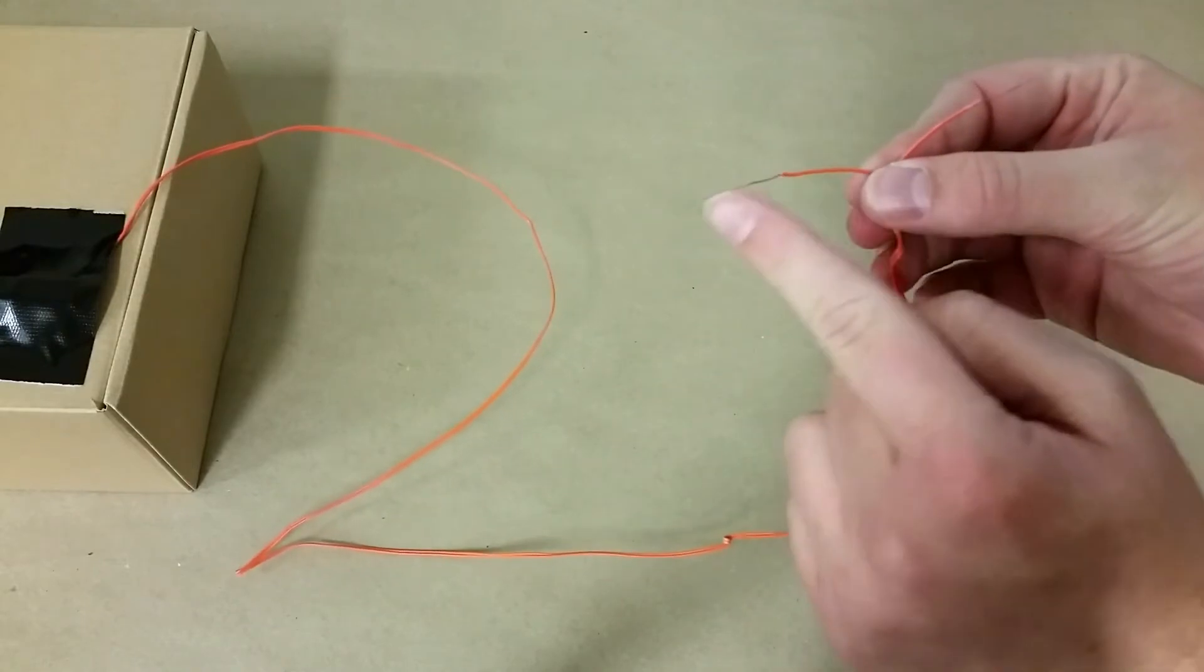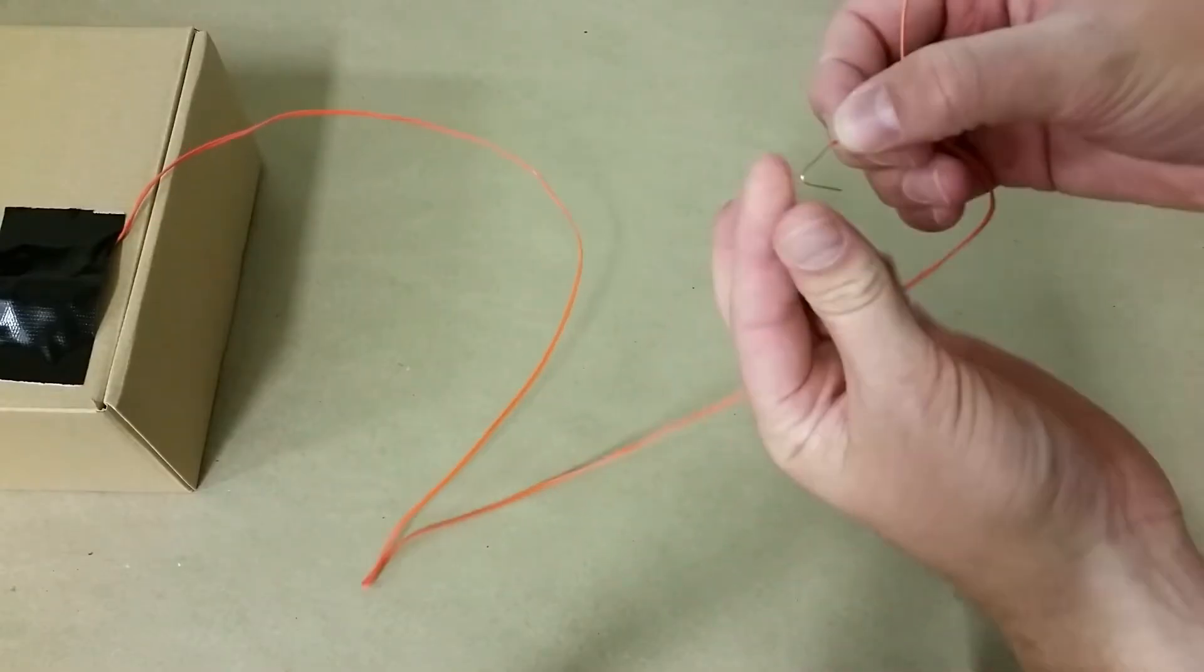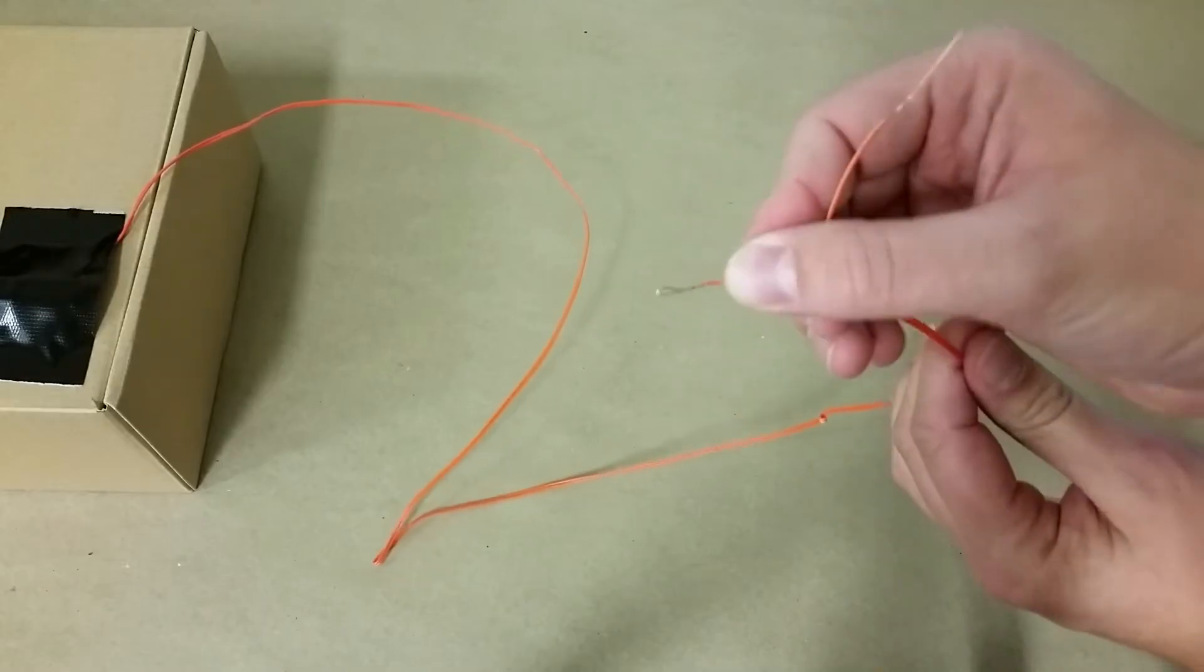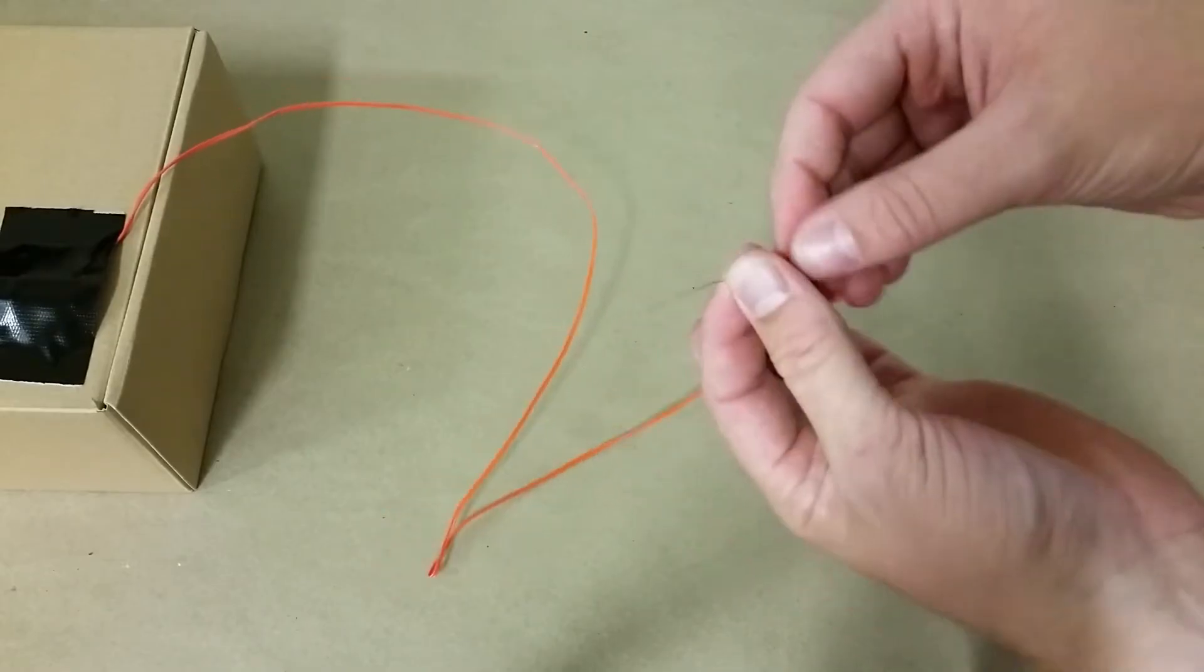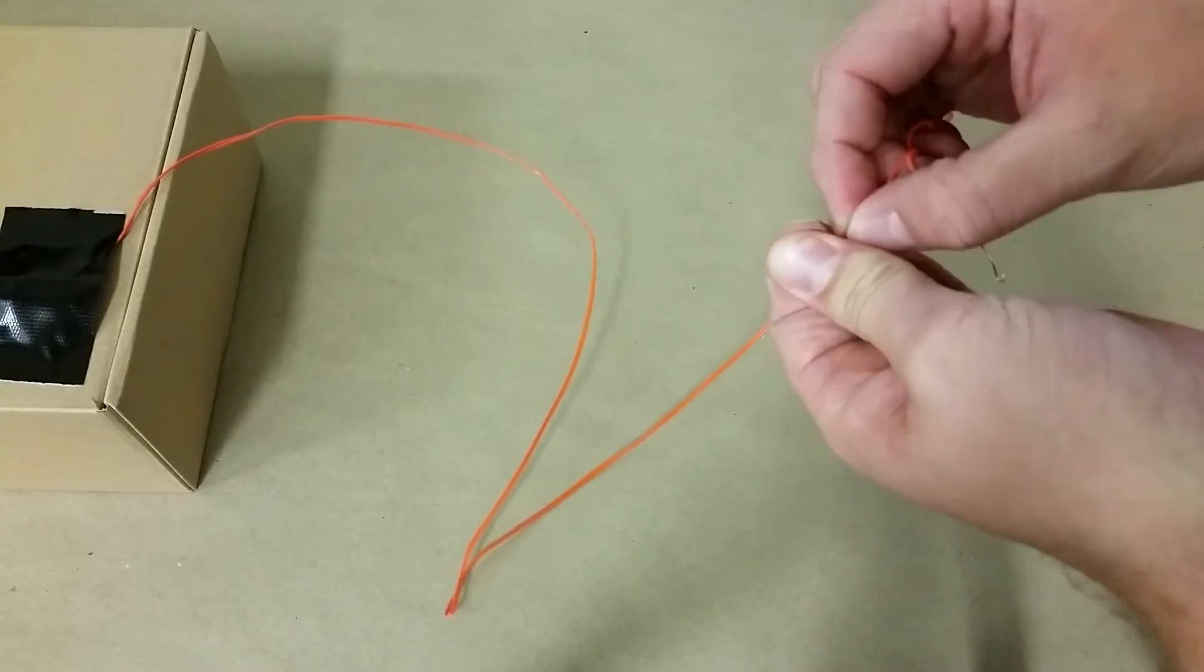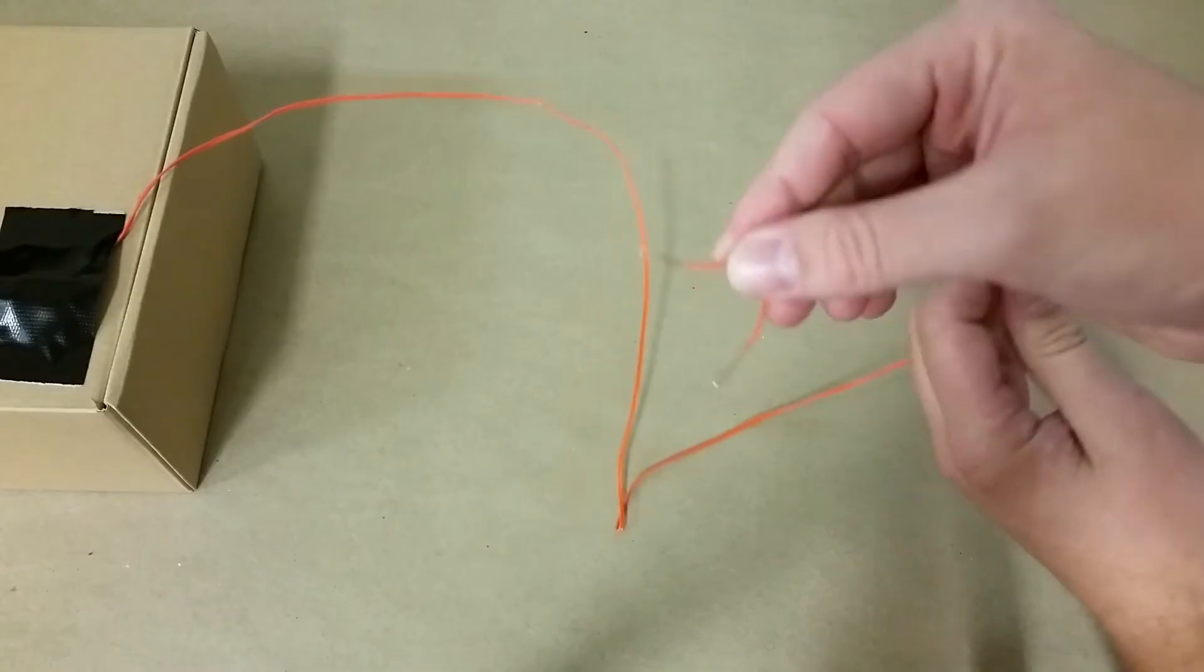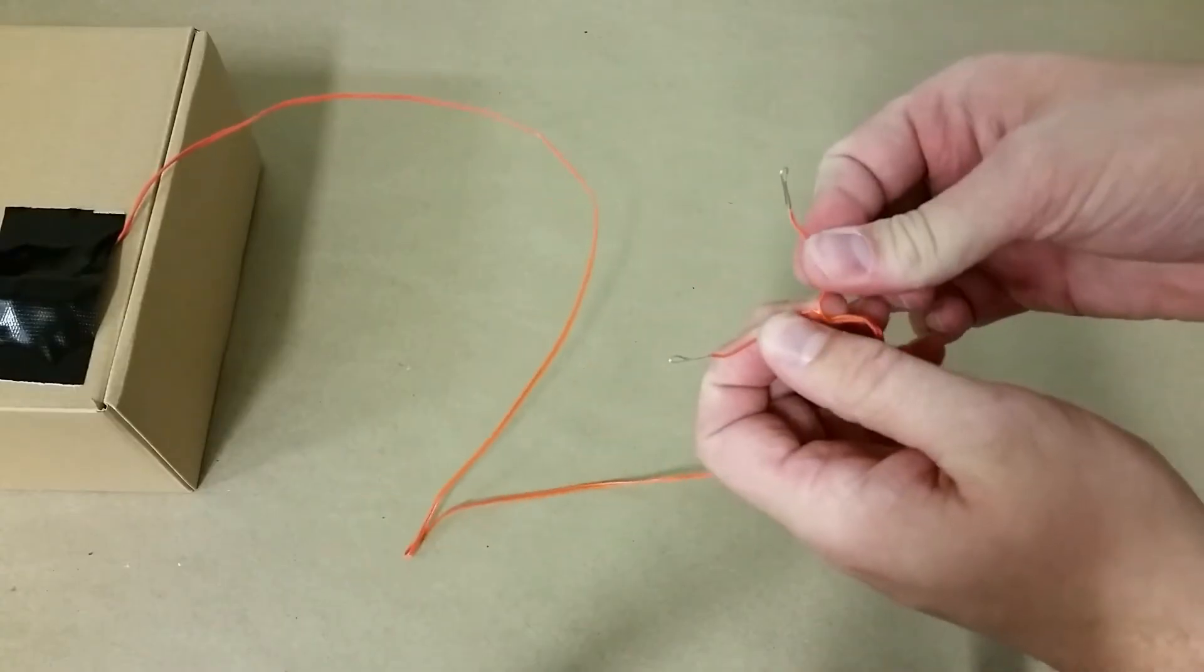Now the wire that is exposed here, we're just going to fold that in half. Like so. Do the same thing for the other side here. Like so. And now we are ready to insert our Talon into our firing system.